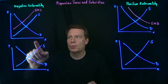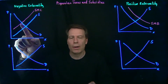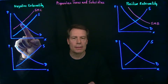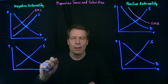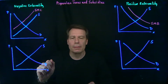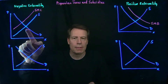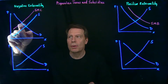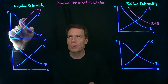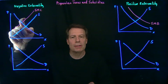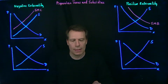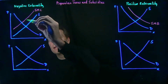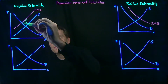That results in a socially optimal quantity where social marginal cost intersects demand. But the market produces where supply intersects demand, so the market will produce goods for which the social marginal cost is above the social marginal benefit, and that creates a deadweight loss in the market.